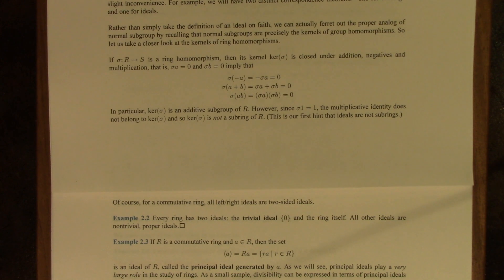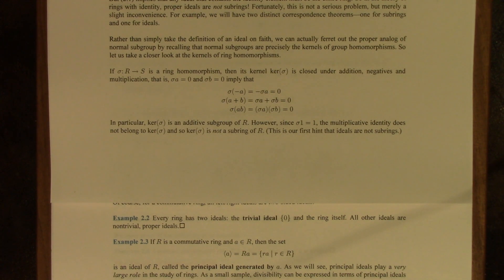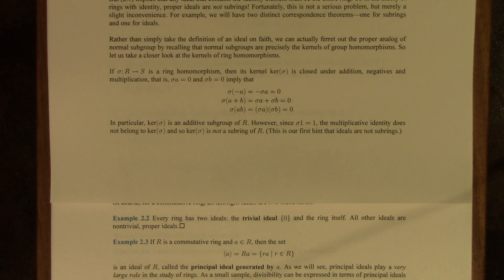Rather than simply take the definition of an ideal on faith — I prefer to motivate definitions when I can — we can ferret out the proper analog of normal subgroup by recalling that normal subgroups are precisely the kernels of group homomorphisms. A subgroup is normal if and only if it's the kernel of a group homomorphism. So we should take a look at kernels of ring homomorphisms, as those are probably the analog of normal subgroups.